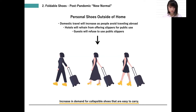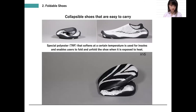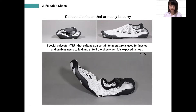Many public facilities in Japan, including Japanese-style inns, usually offer slippers for guests while they stay at the hotel. But due to the impacts of COVID-19, it is expected that this tradition will change. Shoes tend to be too bulky to carry around, but this is solved by making the shoe foldable and compact. Special polyester that softens at a certain temperature is used for insoles and enables users to fold and unfold the shoe when it is exposed to heat. As shown in the movie, the shoe opens autonomously when it is heated.